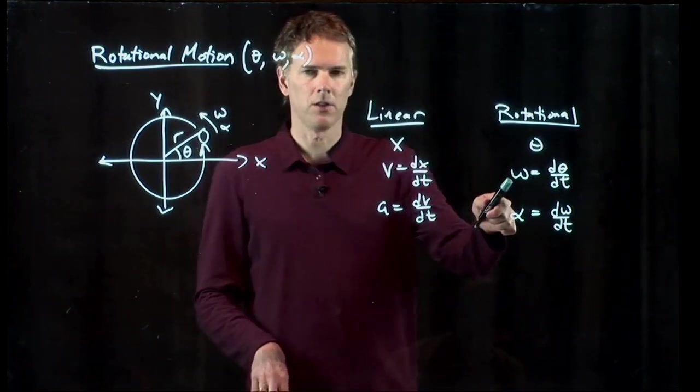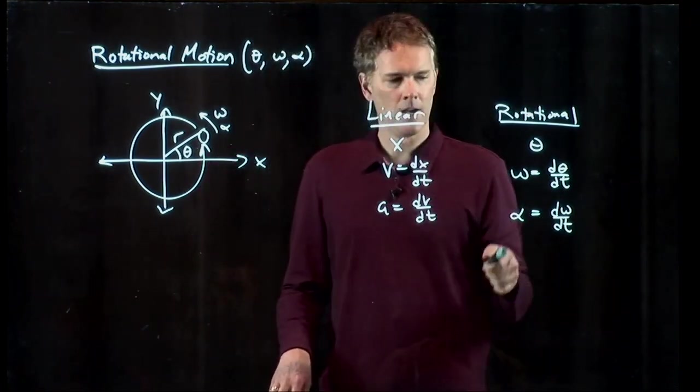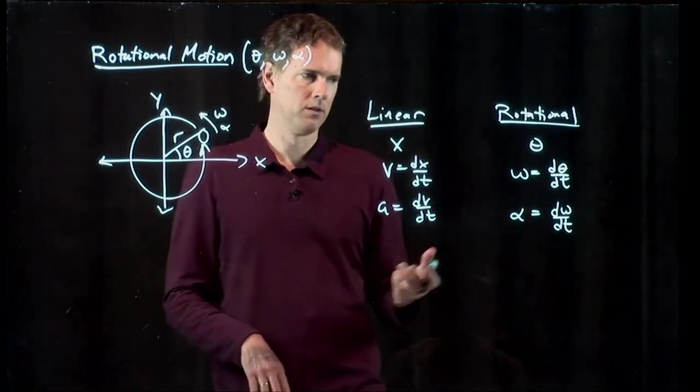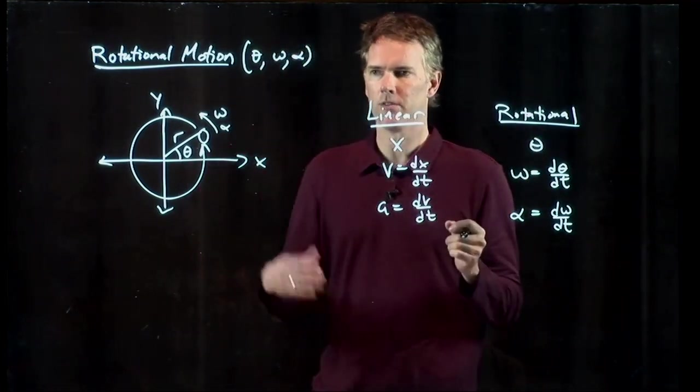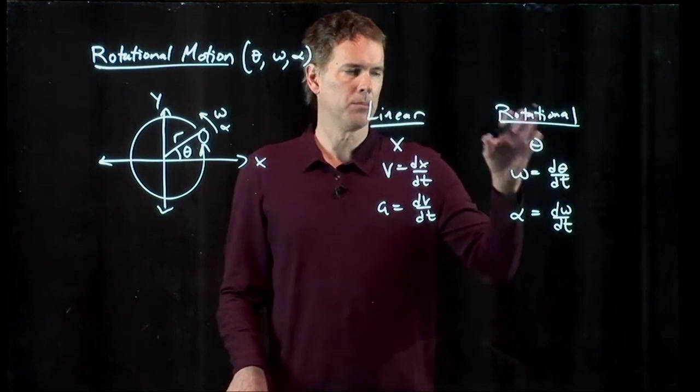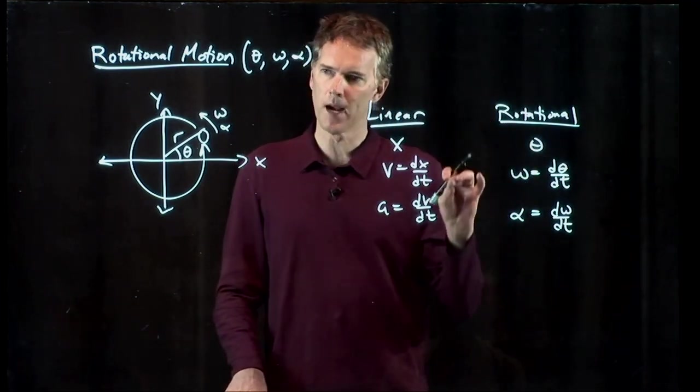Omega is called the angular speed. Alpha is called the angular acceleration. Theta is of course the angle. And typically we use theta in radians.